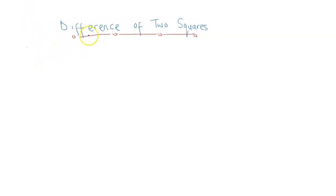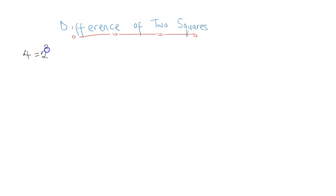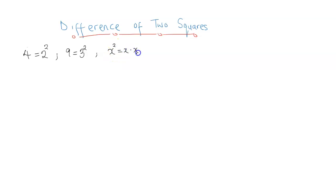Hello, in this video we are going to be considering the difference of two squares. Now we know that in mathematics a squared number is a number that is raised to the power of 2. For example, 4 is a square number because 4 can be written as 2 to the power of 2. 9 is a square number because 9 can be expressed as 3 raised to the power of 2. And of course we can extend it to x squared, because x is x times x, so it's also a squared number.